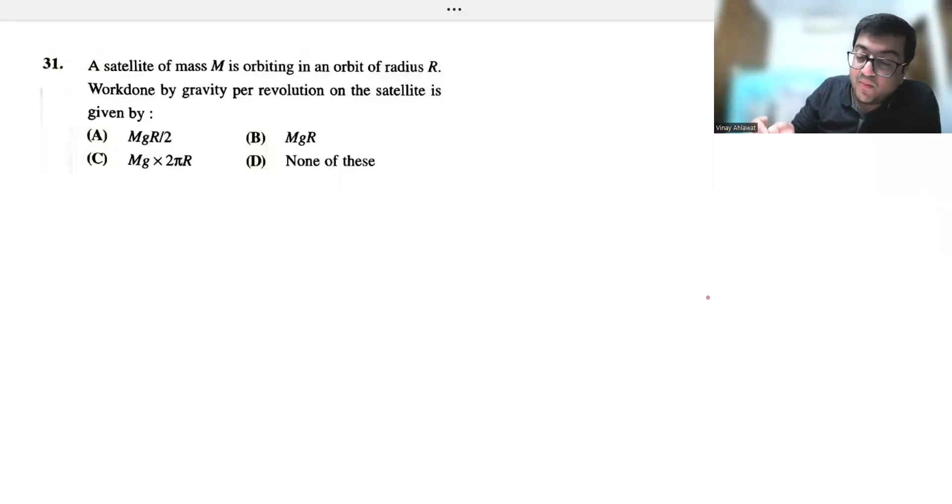The satellite of mass M is orbiting in an orbit of radius R. Work done by gravity per revolution is zero.